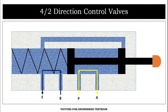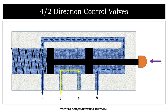Now let's see what happens when we press the push button. When the push button is pressed, the piston or spool moves from right to left and compresses the spring. Port A is now connected to port E (the exhaust port), and the pressure port P is connected to work port B. So when the push button is pressed, port A and E get connected and port P and B get connected.